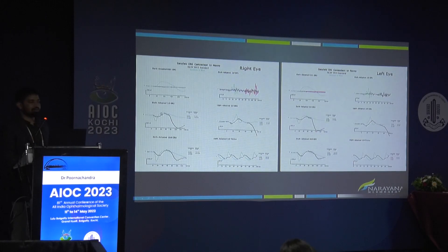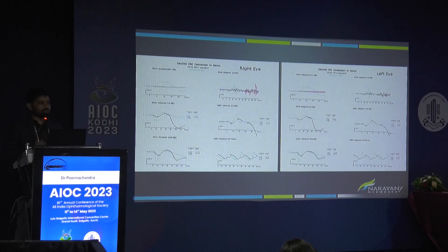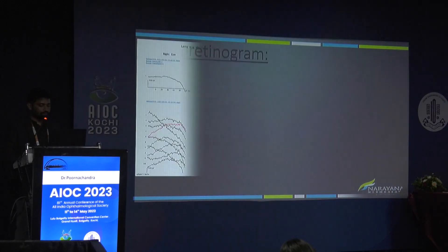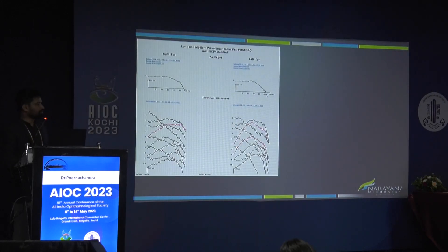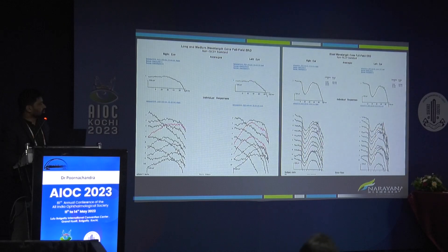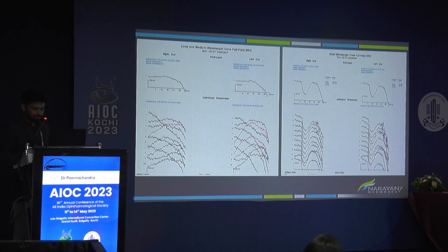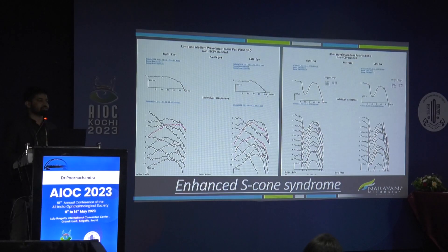To my surprise, the electronegative waveform I was expecting did not appear. So what were we dealing with? It was not CSNB and not juvenile retinoschisis. This is where sometimes you may have to go beyond standard ERG protocols. We checked long- and medium-wavelength cone responses by stimulating with orange light on a blue background — unrecordable. When we stimulated for short-wavelength cones with blue light on an orange background, the response was enhanced. This is a case of Enhanced S-Cone Syndrome.